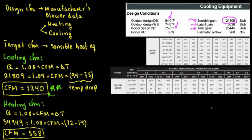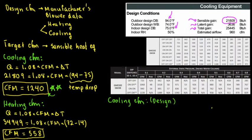Now we go to the manufacturer's data to find the design CFM for cooling. When looking at the blower data — also called performance data or fan performance data — CFM is paired with external static pressure (ESP). So whenever you state a CFM, you also need to state the static pressure at that point.